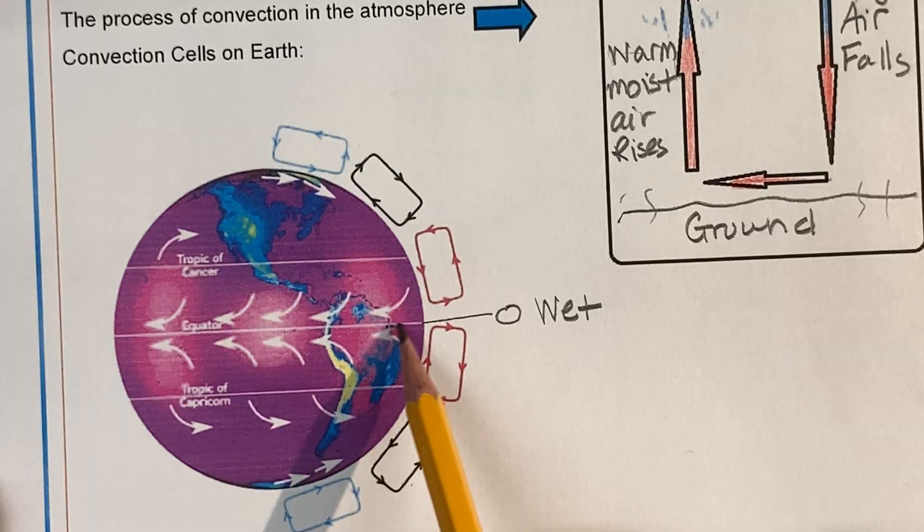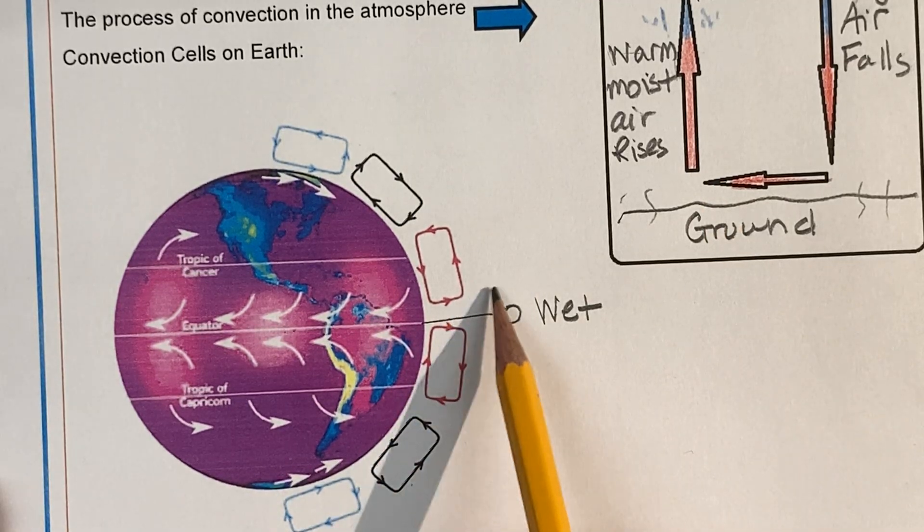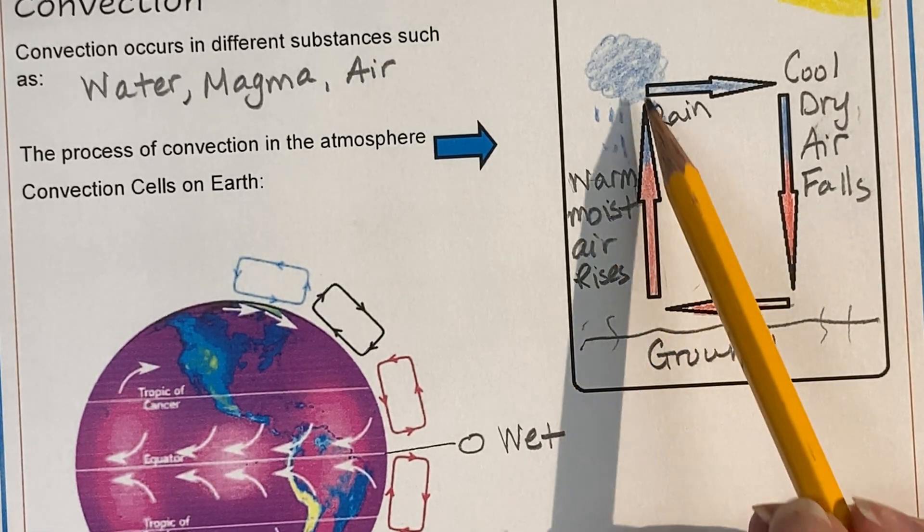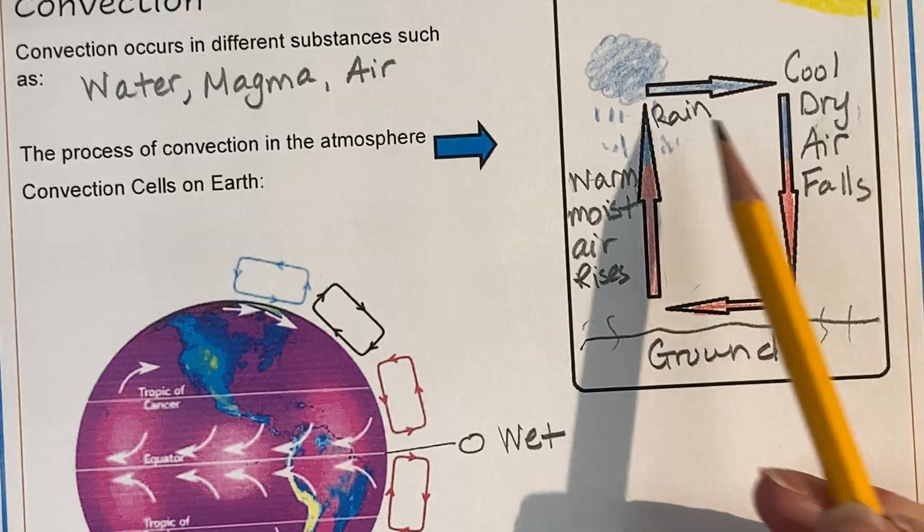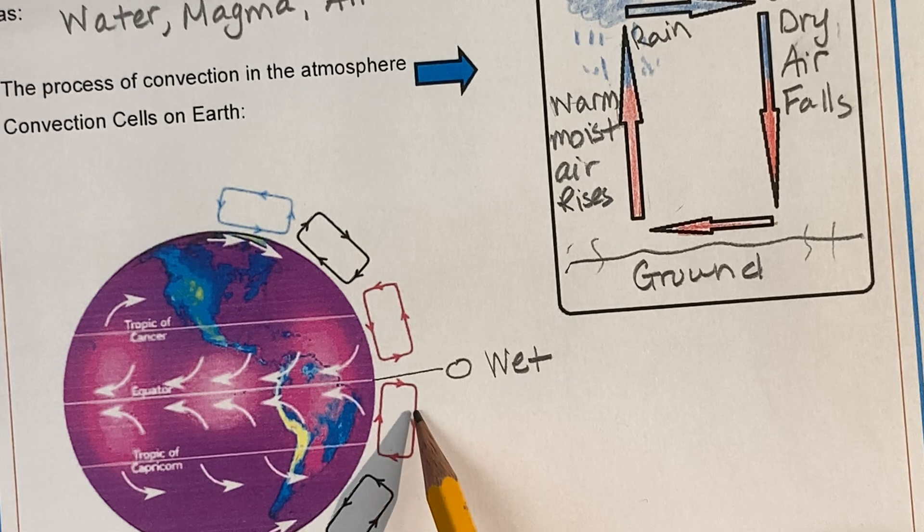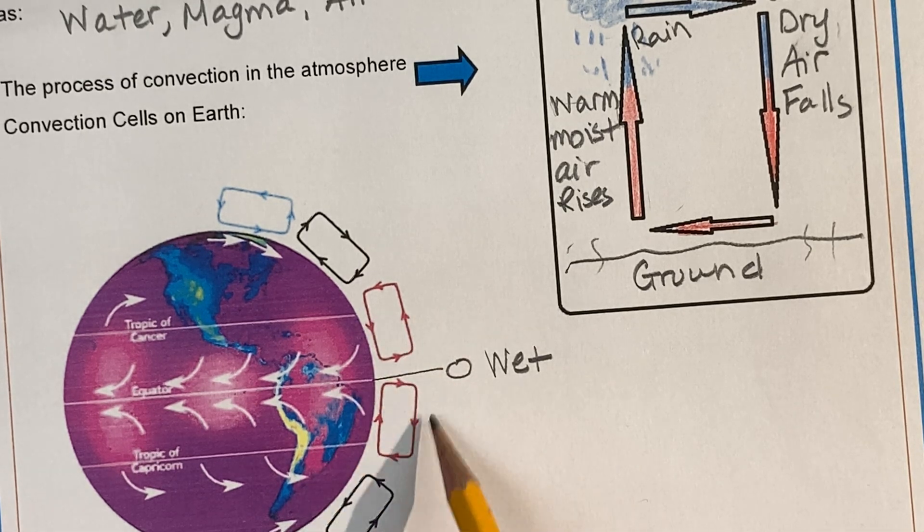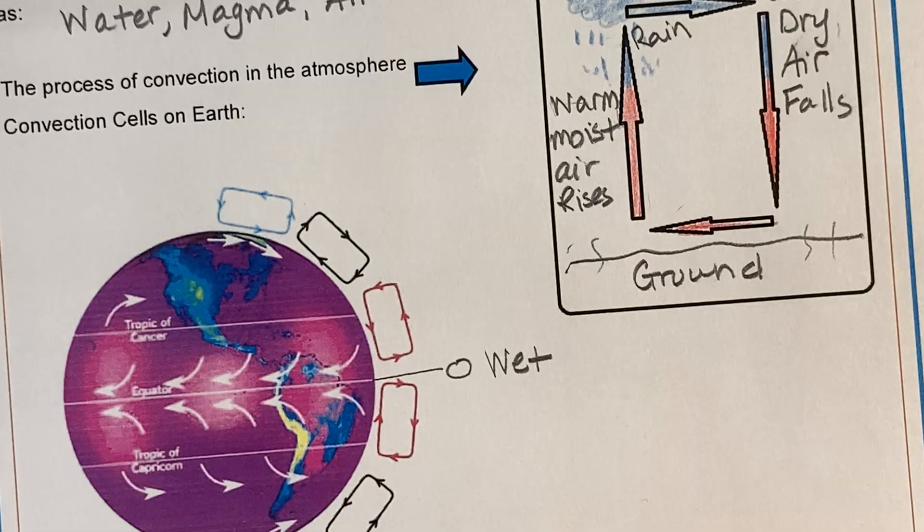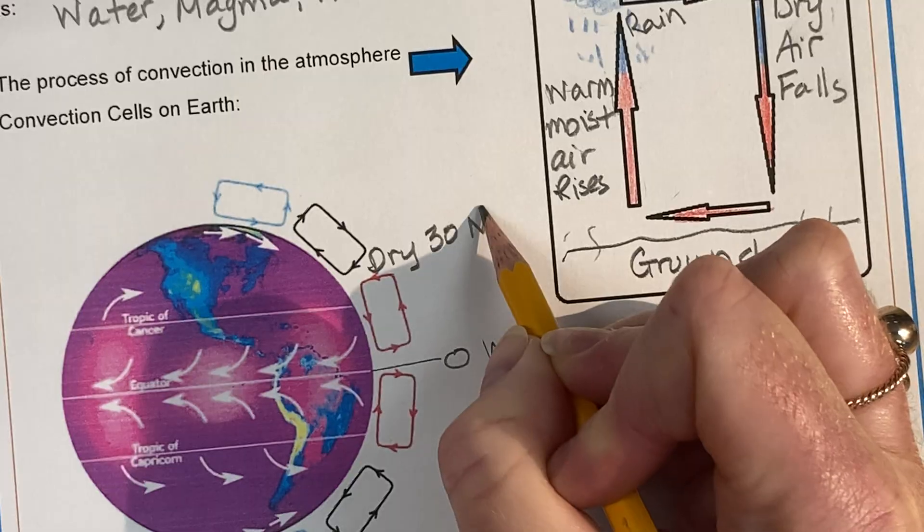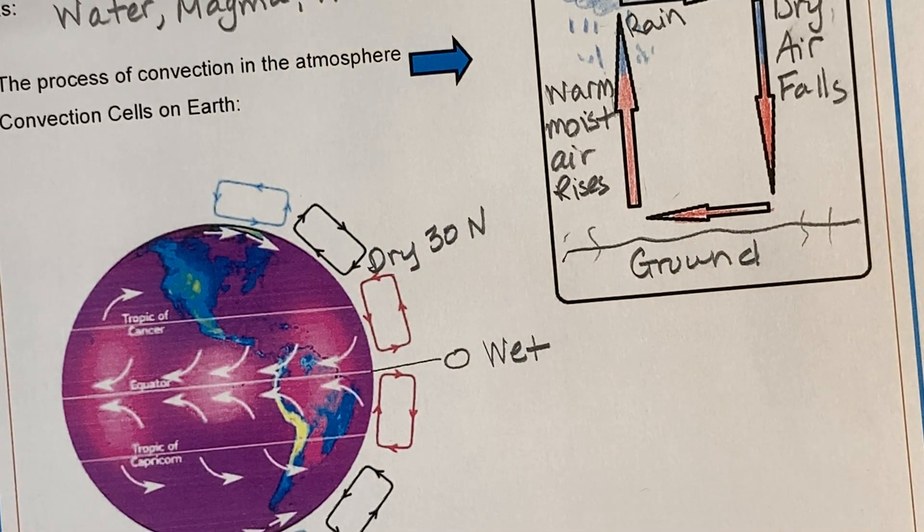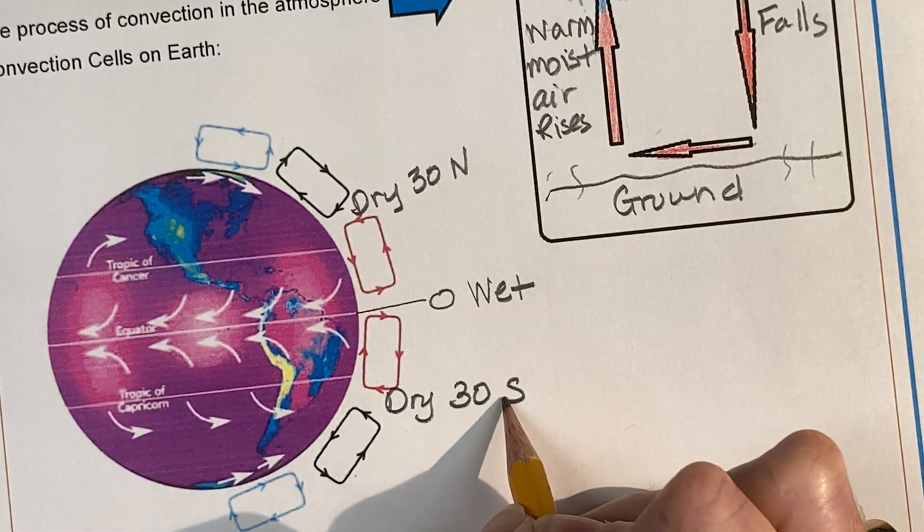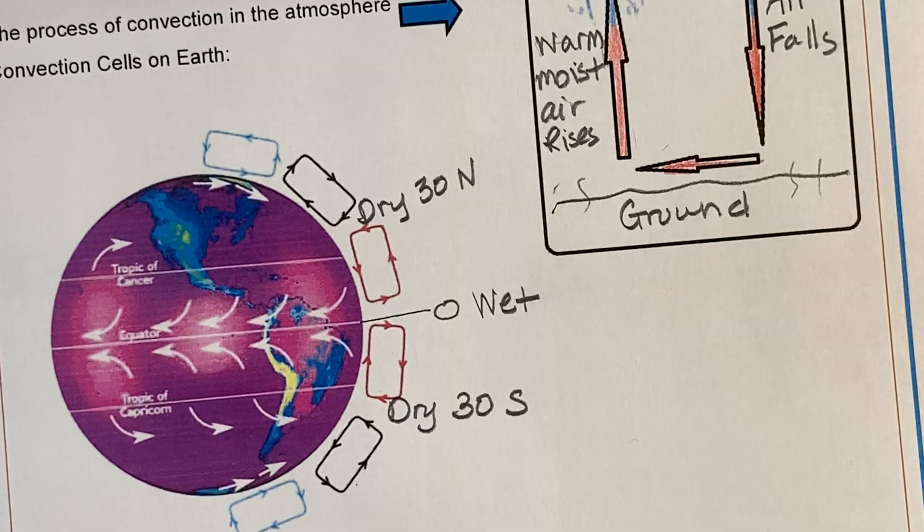This warm, wet air rises, and then it rains right directly back. In this convection cell, as it rises, it's going to rain where it rose. Then it's going to move. So this cell then moves 30 degrees north, 30 degrees south latitude, so both north and south, and it's going to fall as dry air. So this is dry at 30 degrees north. Most of your deserts and dry climates on the earth are at 30 degrees north latitude and 30 degrees south latitude.